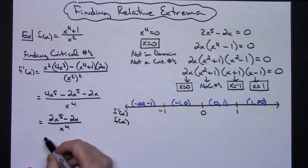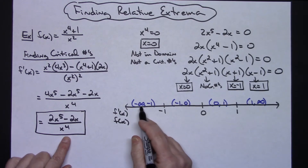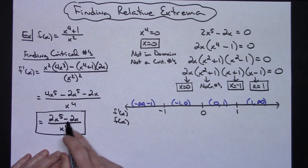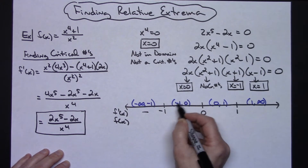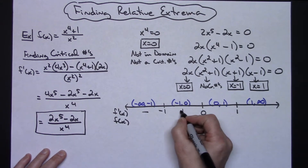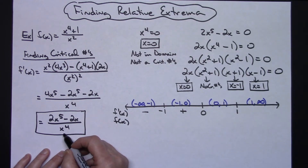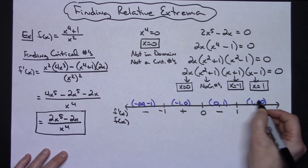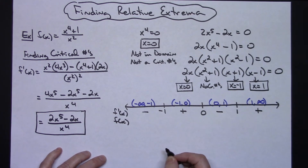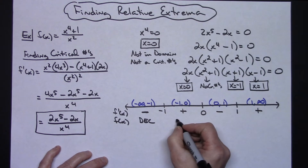Let's go back and look at that derivative. Picking a relatively large negative number in the first interval: negative on top and positive on bottom, so the result is negative. Picking a smaller negative number in the second interval: positive divided by positive, so it's positive. Picking a small positive number in the third interval: positive on top and positive on bottom gives negative — wait, it gives a negative. Then picking a really large number in the fourth interval: positive divided by positive, so it's positive.